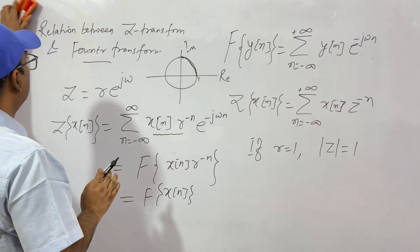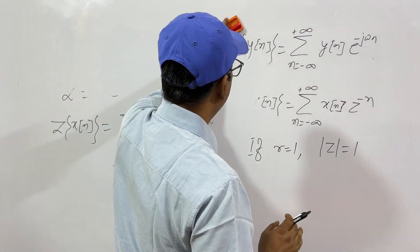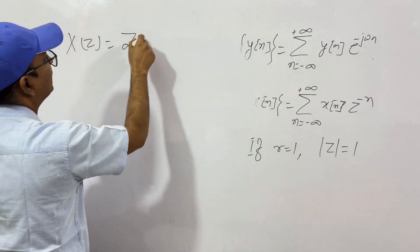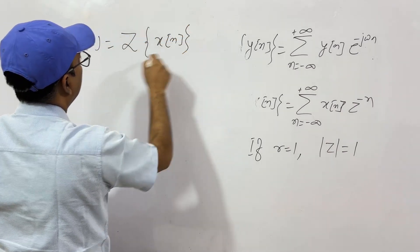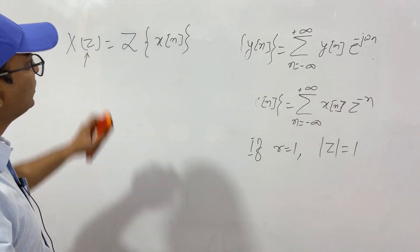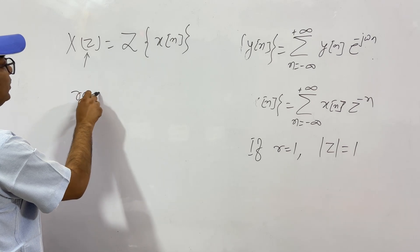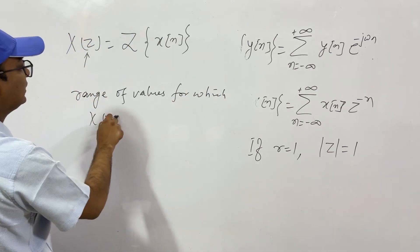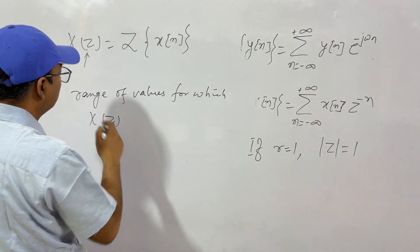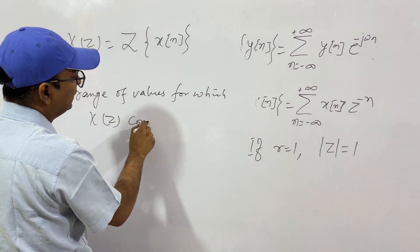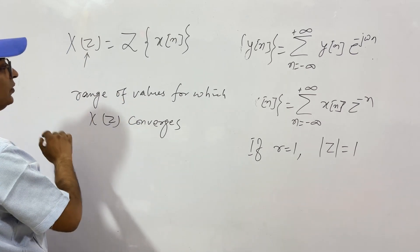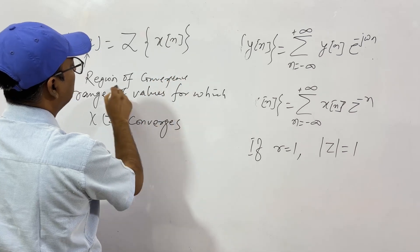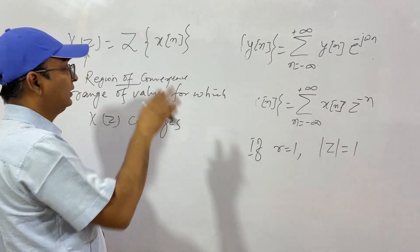Next, let us move to region of convergence. When you take X(z), which is the Z-transform of X(n), you have a function of Z. There will be a range of values for which X(z) converges. This set of values is called the region of convergence. We will now take examples to understand this.